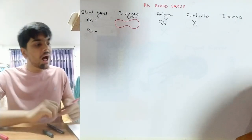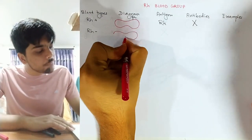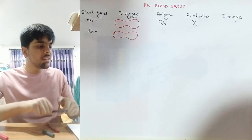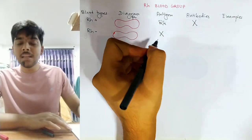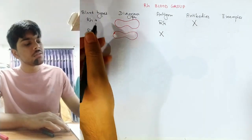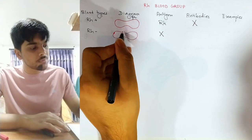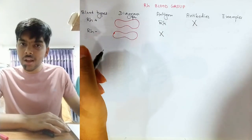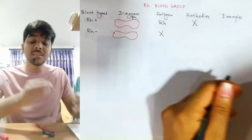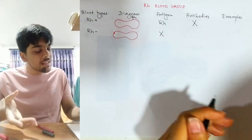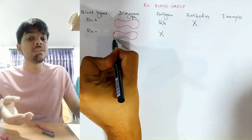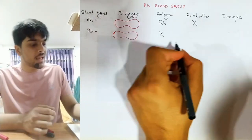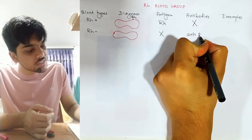In Rh negative blood, there is no Rh antigen on the surface of the red blood cell — the Rh antigen is absent. Since the person with Rh negative blood does not have Rh antigen on the RBC surface, the immune system does not recognize it. Because it is not recognized, the body prepares missiles — anti-Rh antibodies — against the Rh antigen.